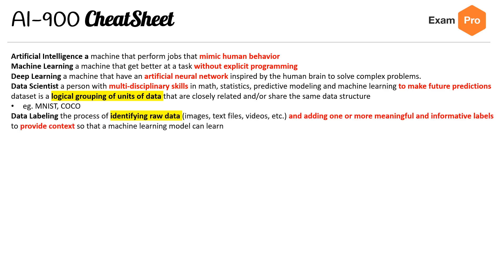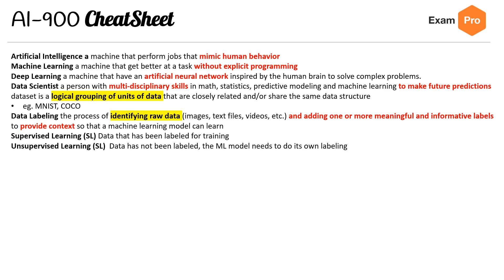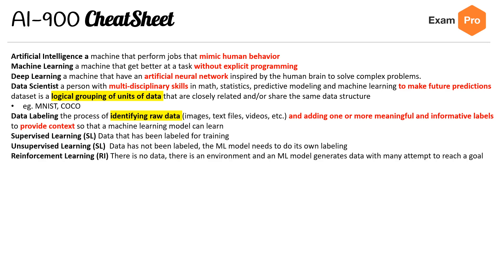Examples of datasets would be MNIST and COCO. Data labeling is the process of identifying raw data — so images, text files, videos — and adding one or more meaningful and informative labels to provide context so a machine learning model can learn. Supervised learning: data that has been labeled for training. Unsupervised learning: data that has not been labeled, and the ML model needs to do its own labeling. Reinforcement learning: there is no data; there's an environment and an ML model that generates many attempts to reach a goal.